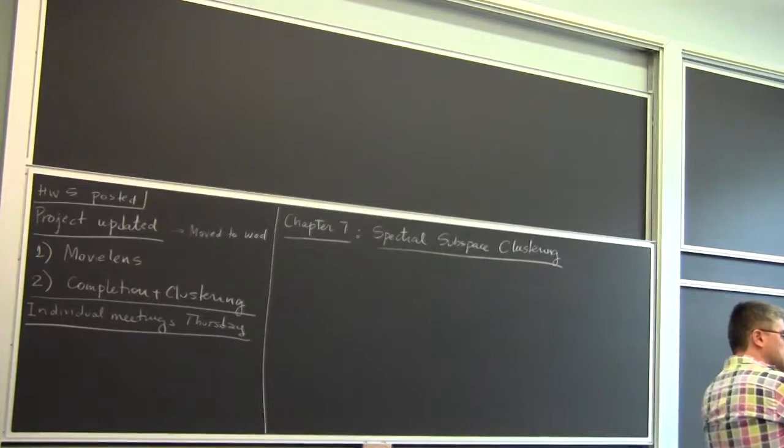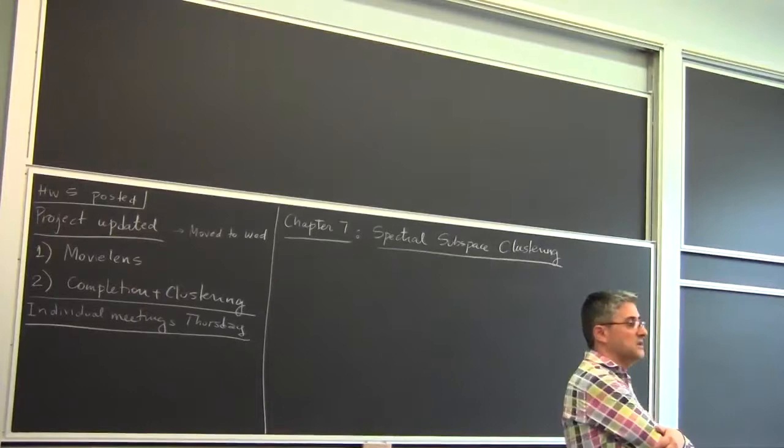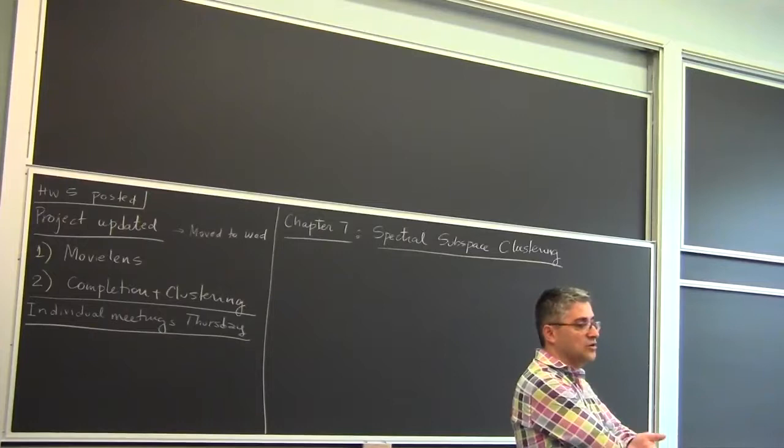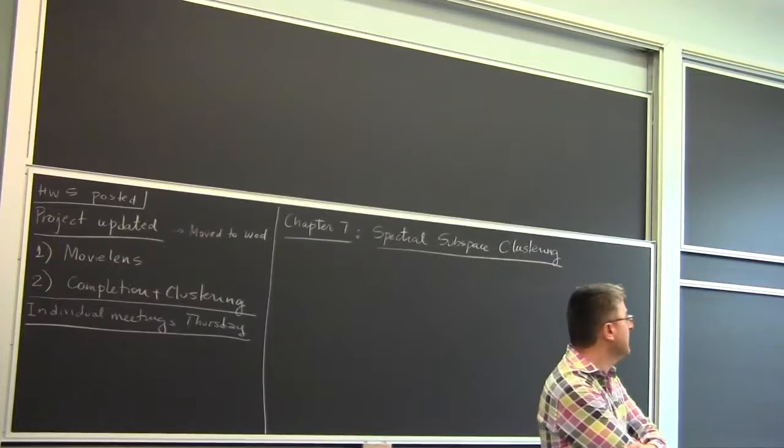What were the advantages of k-subspaces? It's very nice, simple, and intuitive. It directly relies on PCA, which we already know, and the extra step is just assignment based on a distance. But the minuses are: it's non-convex, depends on initialization, there are no guarantees of getting the correct clustering, and you need to know the number of subspaces and their dimensions beforehand.